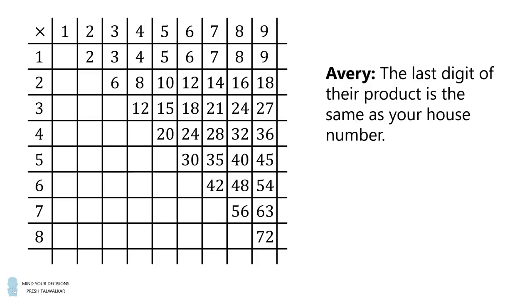Avery had said, the last digit of their product is the same as your house number. Brian replied, let me work it out. Now I know. So we don't know Brian's house number, but we can work through the possibilities. What if Brian's house number was equal to 2? Would he have been able to work out the sum of the two numbers? The answer is no.